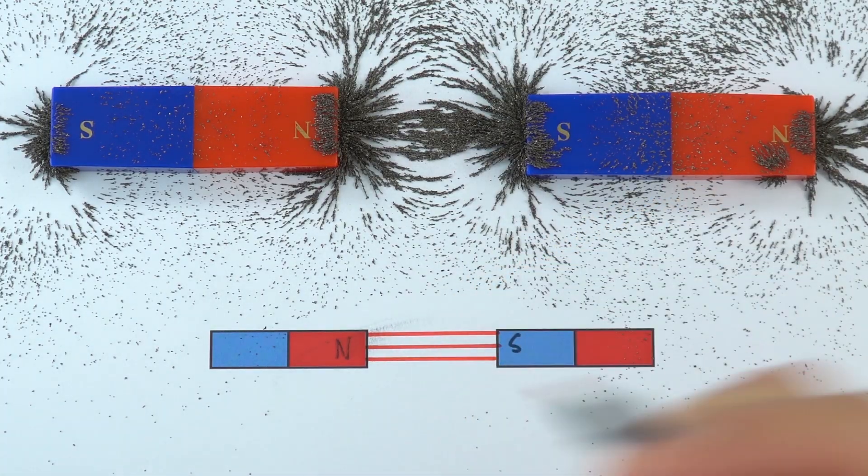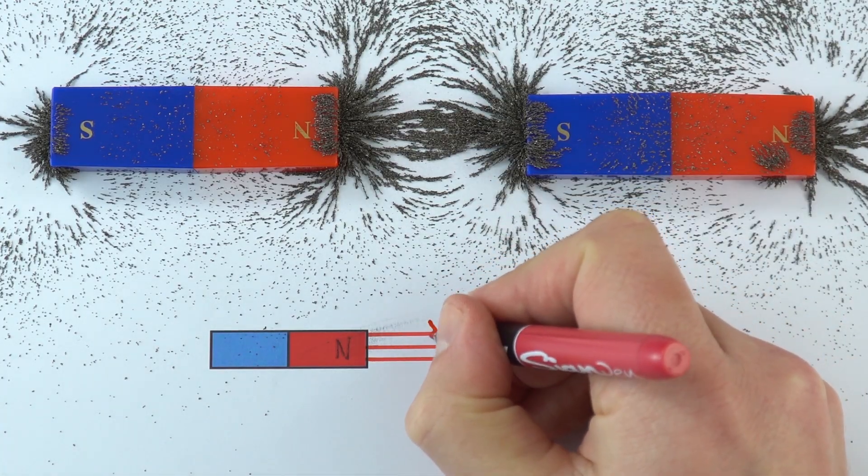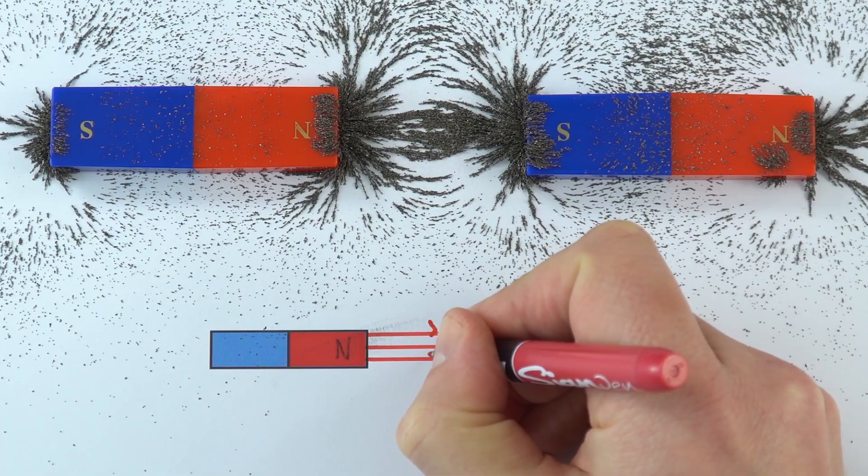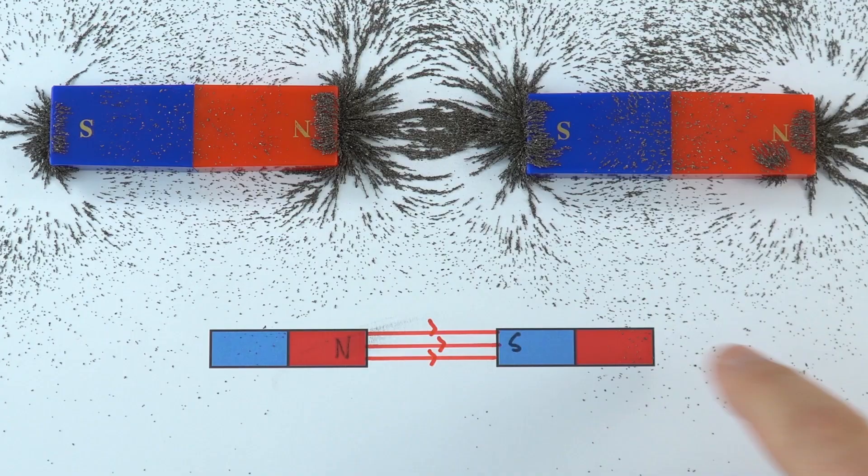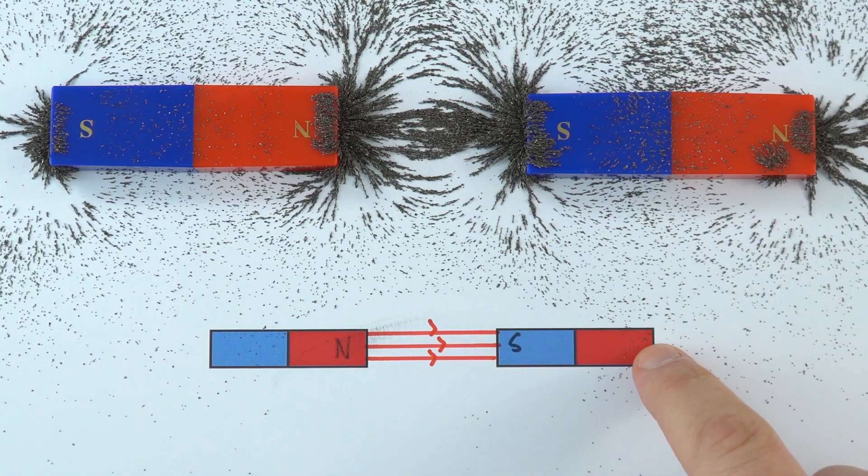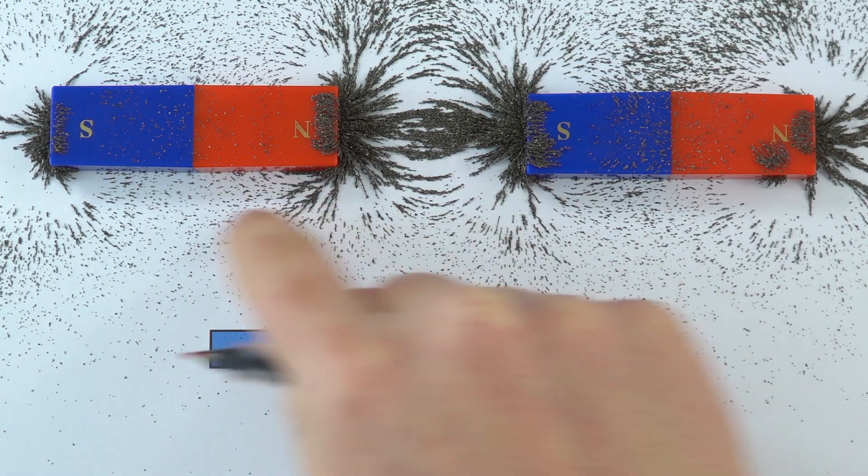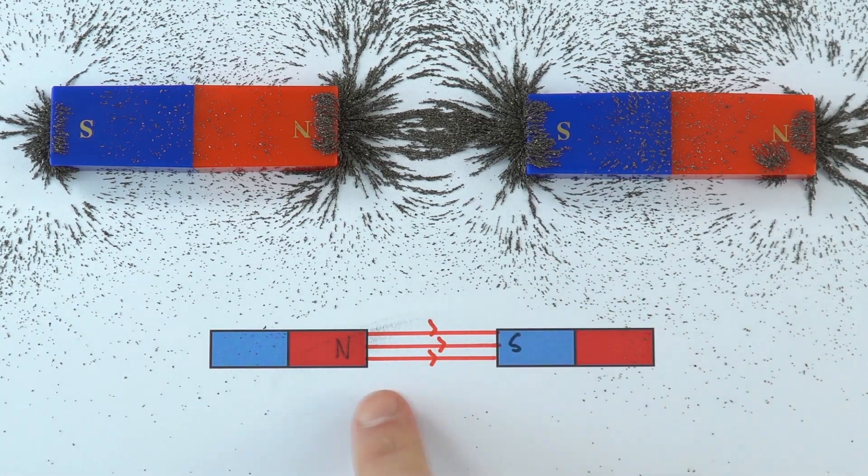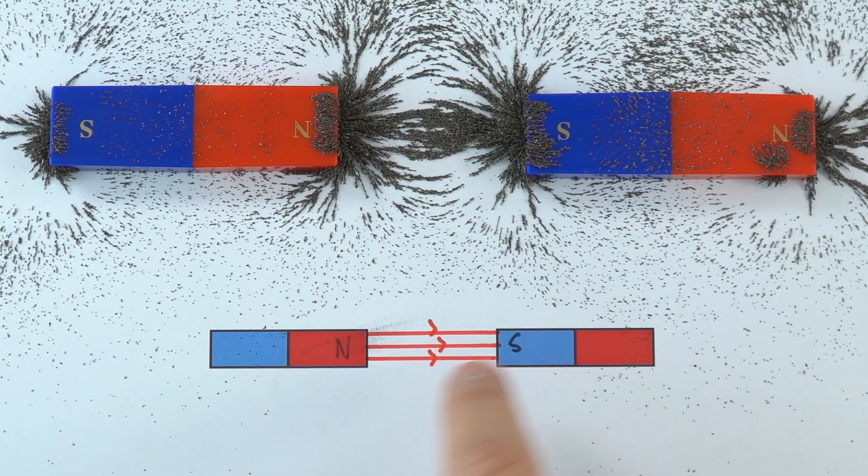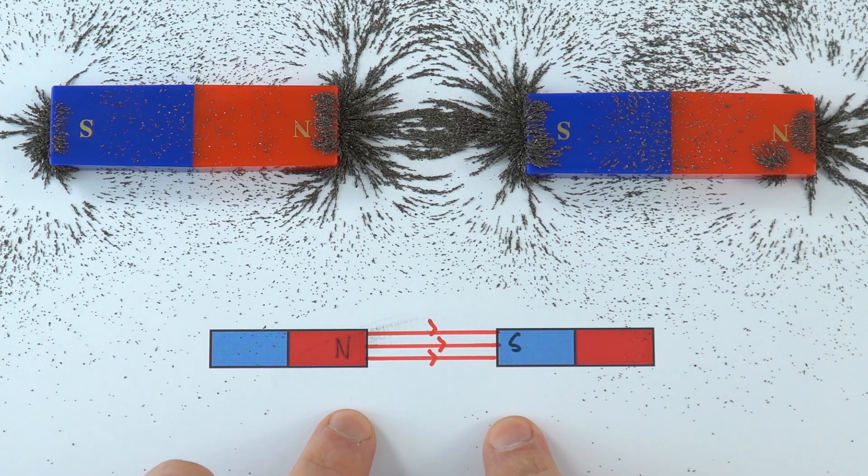I'm just going to put the arrows to show the direction that goes from north to south. In actual fact, if we're to do the complete diagram we could show that they're still going to be arrows that go from the north pole here and they loop around to the south end over here. It's a bit like one massive bar magnet in effect. This is the field pattern that we get between the poles of magnets especially when they're attracting.